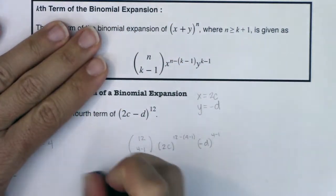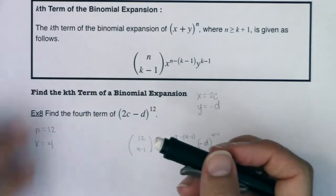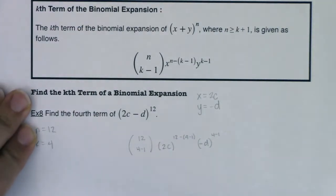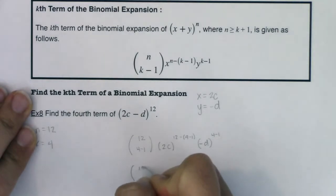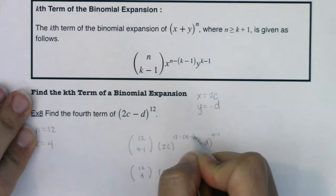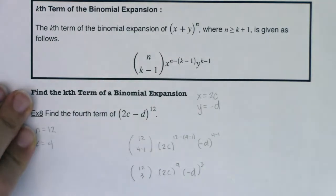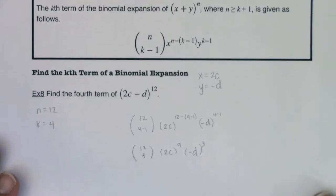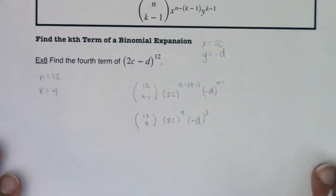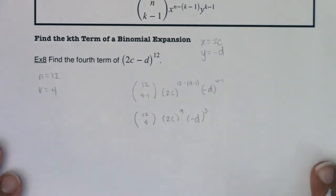All right, so if we're going to clean this, this is going to now turn into 12 choose 3, 2c. 4 minus 1 is 3, 12 minus 3 is 9, negative d cubed. So the only thing I need at this point, and I'm going to scooch this up now, I just need to figure out what that number 12 choose 3 is. Once I find that number, I'll be done with this problem. So let's see what we got going on. I'm going to head into my calculator.